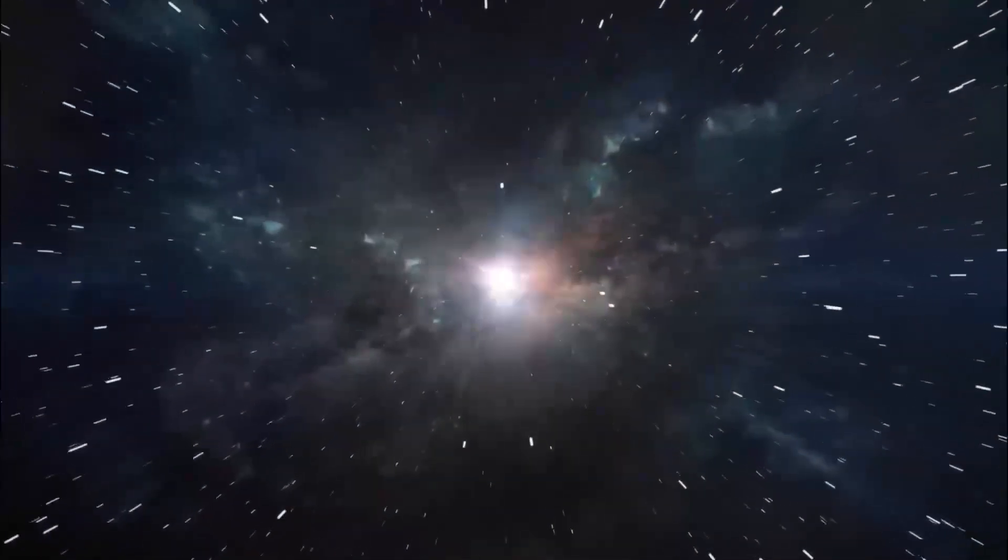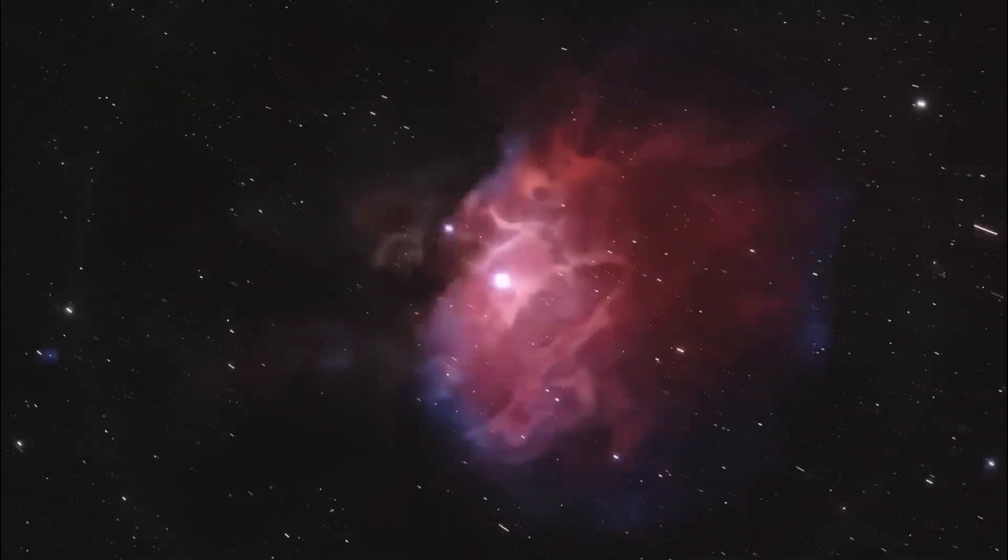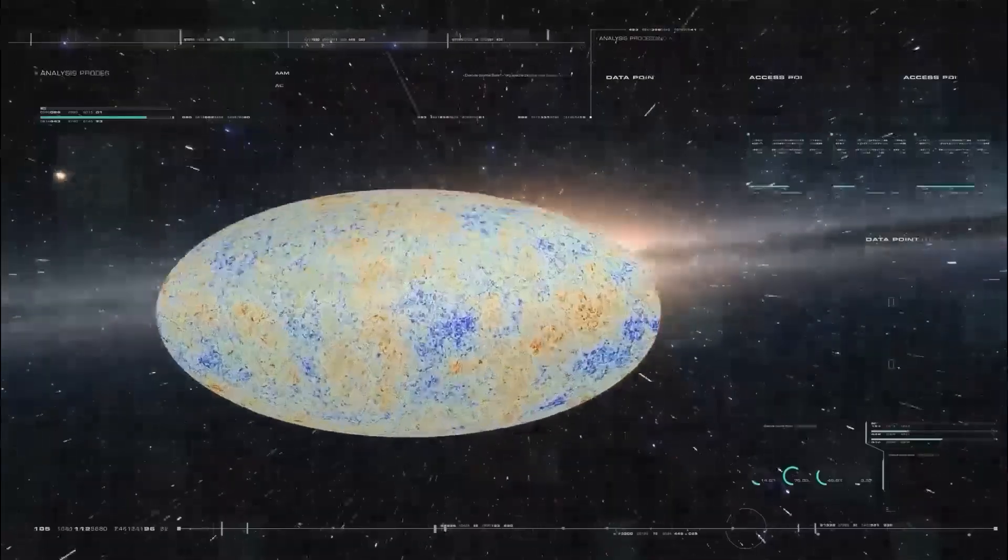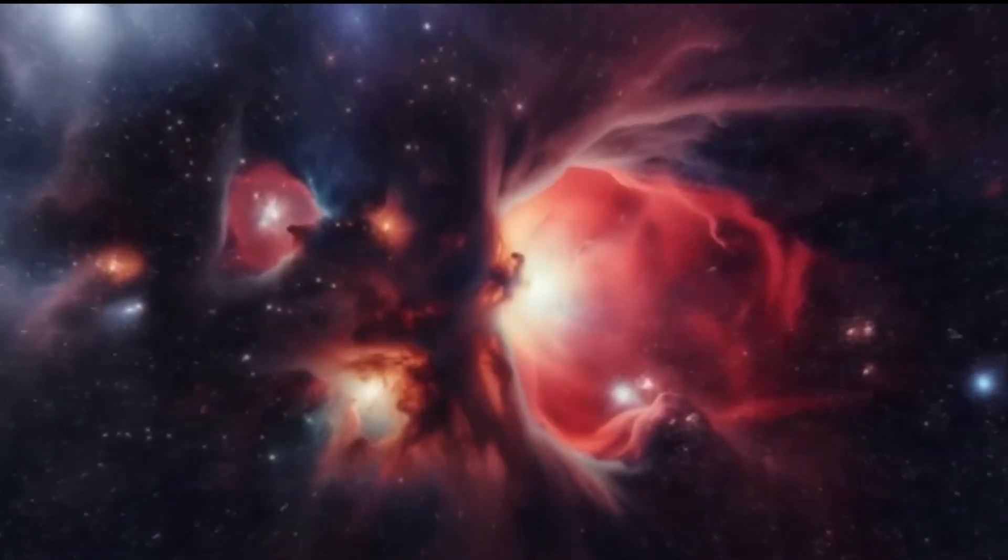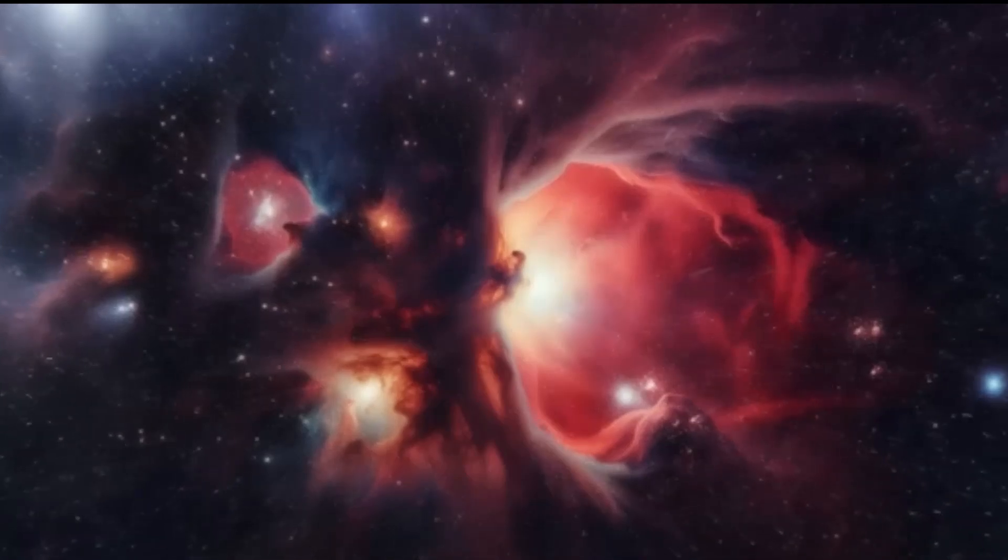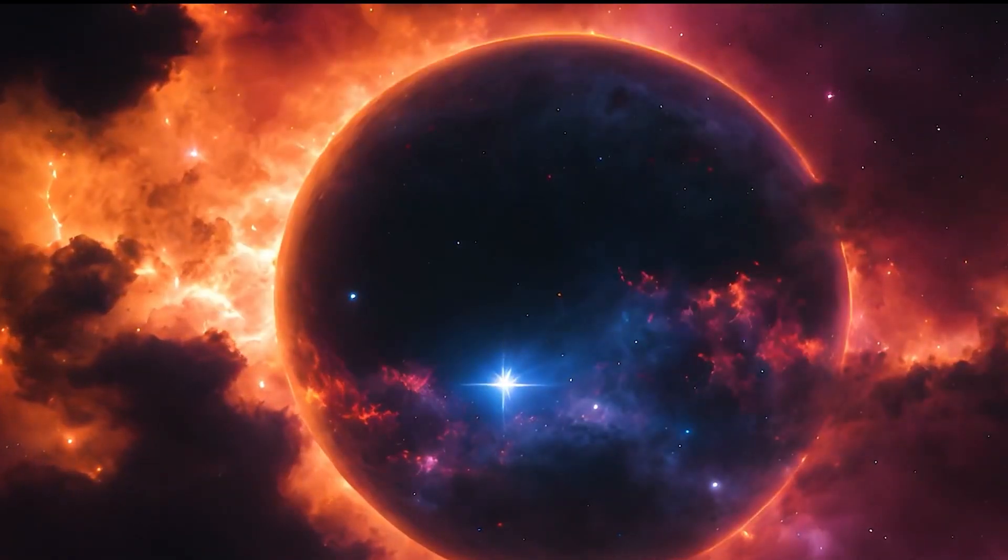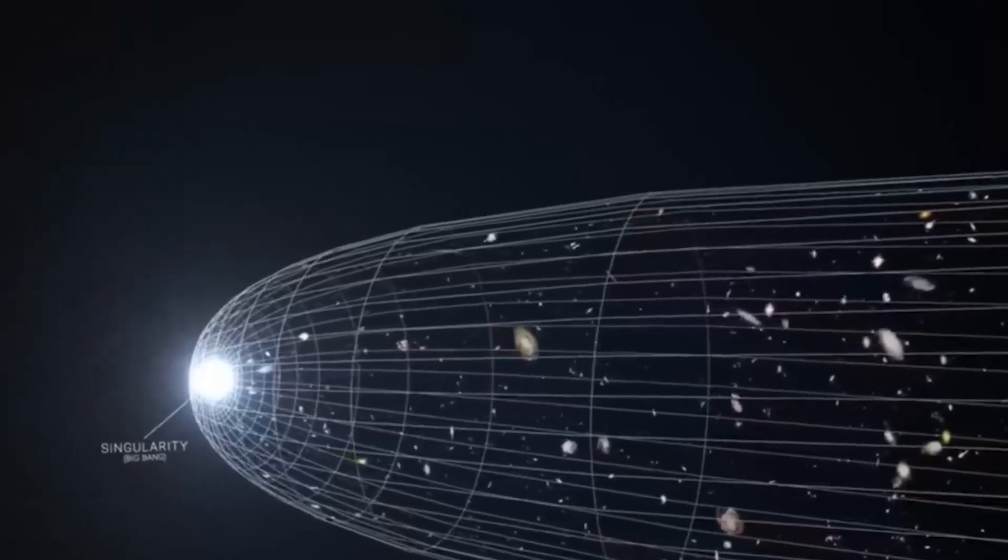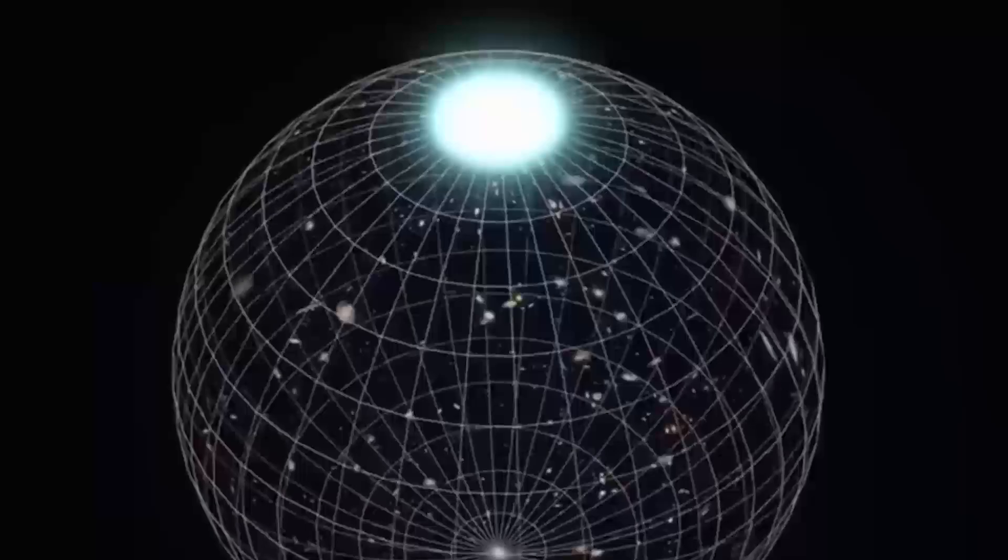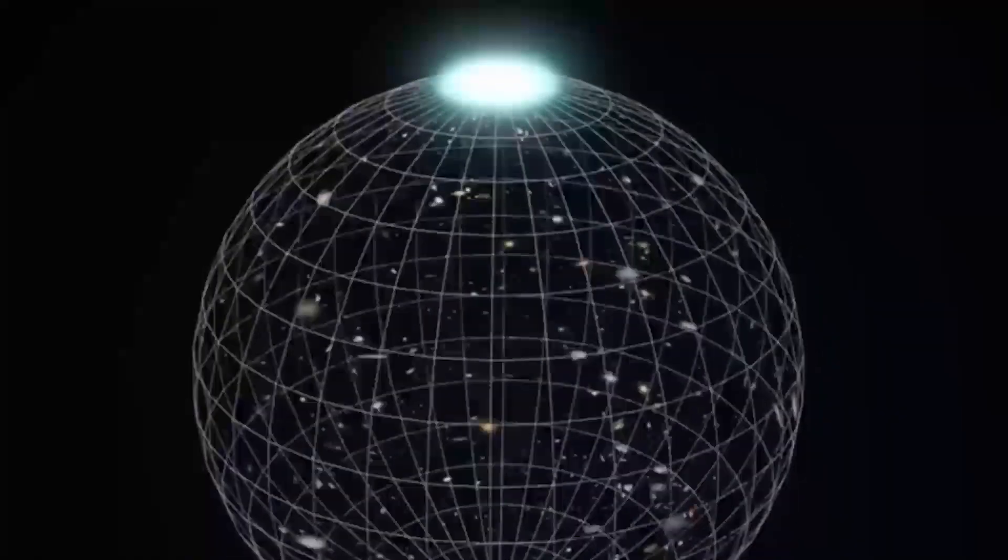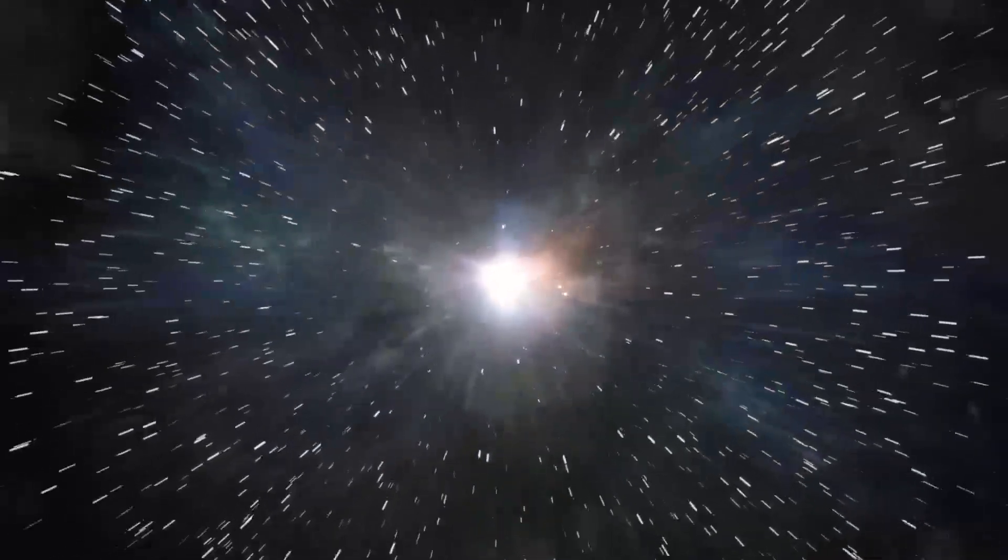The universe is filled with energy fields that interact to form everything we see. Quantum field theory, one of the most accurate theories in physics, describes the universe as being made of energy fields that permeate space and interact, creating everything we observe. These fields are constantly moving due to quantum fluctuations, and even in their lowest state, known as the vacuum state, fields remain active. Virtual particles continuously borrow energy from the vacuum, briefly appear, and then disappear.